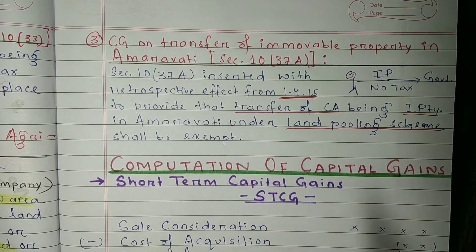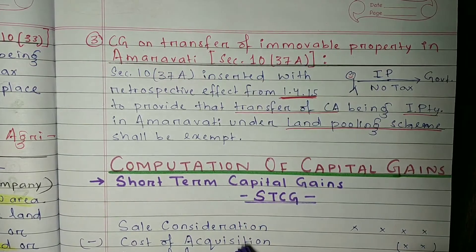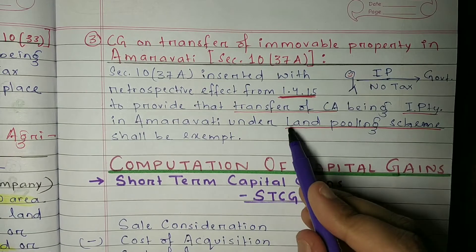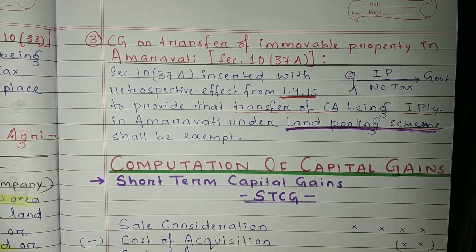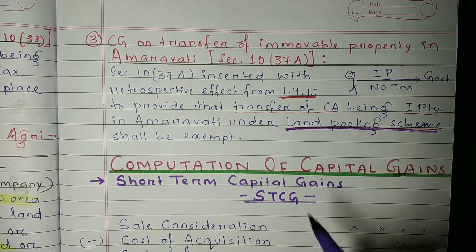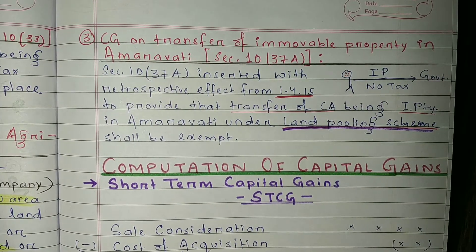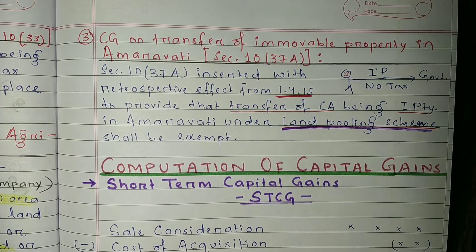This transfer is exempt under this section. The scheme is called the land pooling scheme — the government needs land, you have land, and you give it to the government, so the government pools land from people. That is why it is called the land pooling scheme.